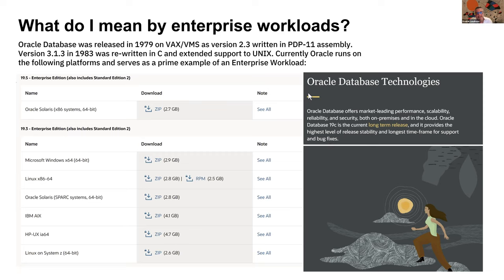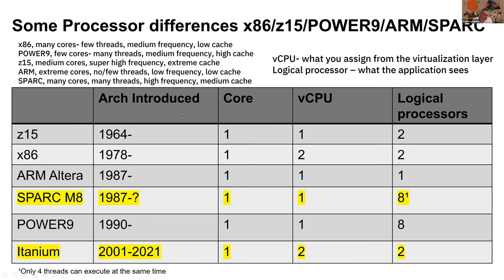So we have four different architectures which are not x86 that an enterprise workload supports. Why is that? You might think everything is ARM or x86, and you might say ARM is new so it can do a much better job — but if you look back, the ARM architecture, although it's in all of our phones, was still invented in 1987. The first IBM mainframe was released in 1964, the first x86 came in 1978, and both ARM and SPARC came about in 1987. Power came in 1990.